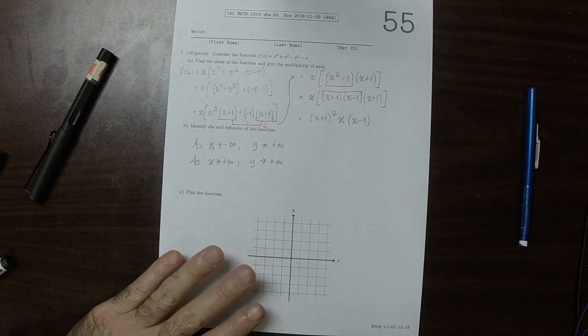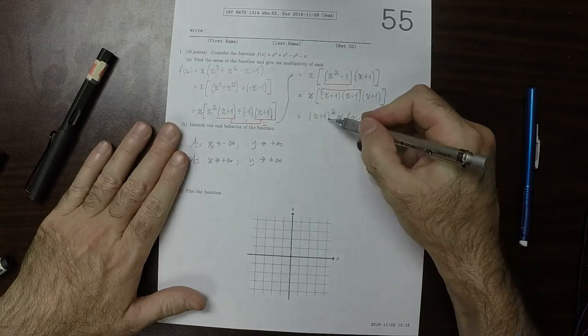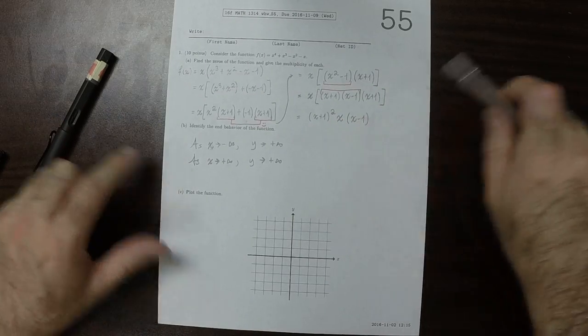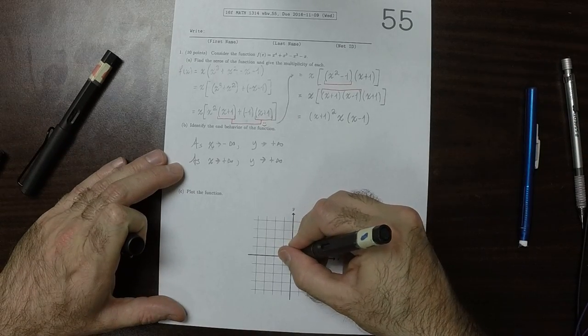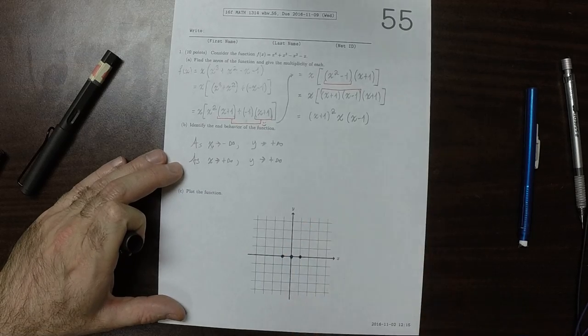So both sides are up. So because of these, we know that zeros are negative 1, 0, and positive 1.